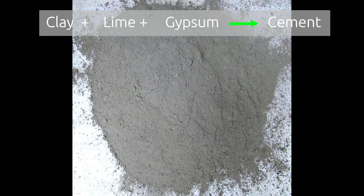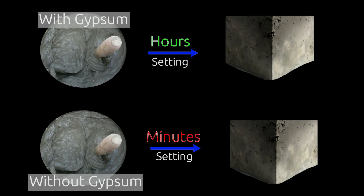Gypsum is a natural mineral. It is a very important ingredient in cement as it controls the rate of setting. If we do not add gypsum to cement, cement paste will become hard very fast.